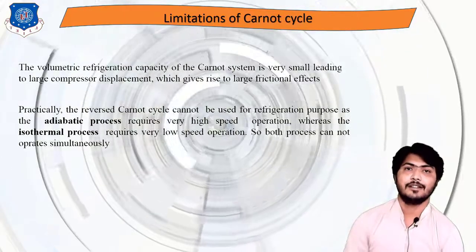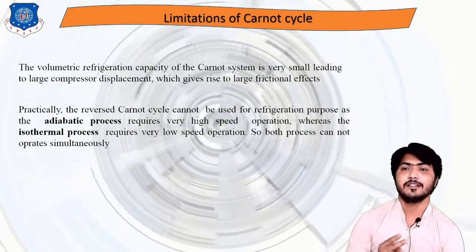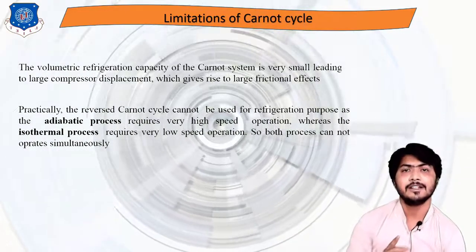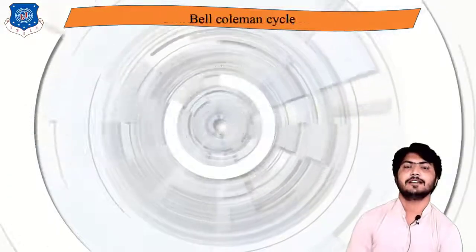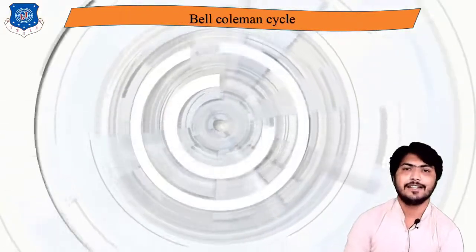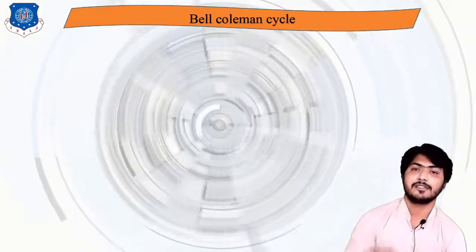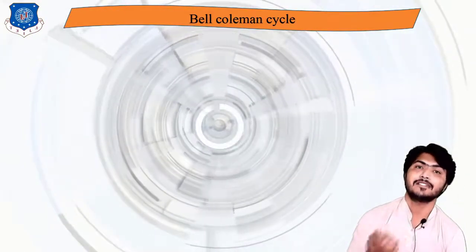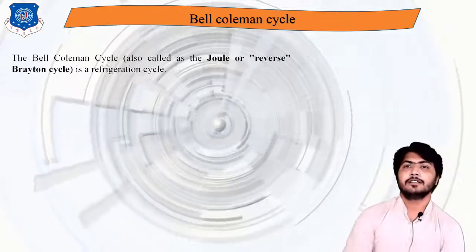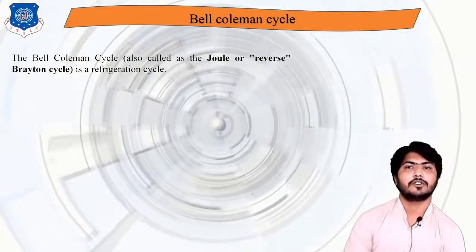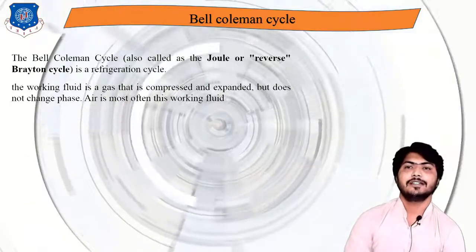Since the reverse Carnot cycle is not practical, we use two different processes instead of isothermal processes. This leads to the Bell-Coleman cycle (also called the Joule cycle or reverse Brayton cycle). In this cycle, two constant pressure (isobaric) processes replace the two isothermal processes, while the isentropic processes remain the same.